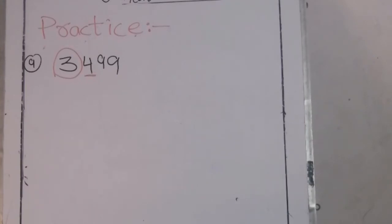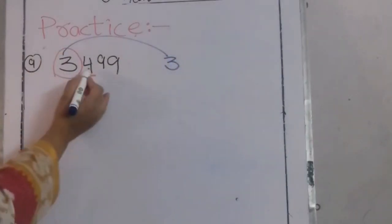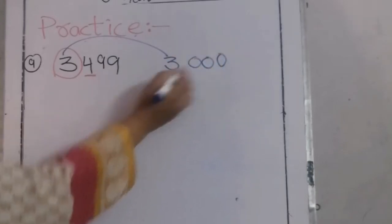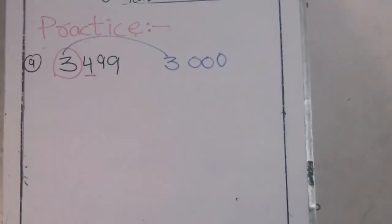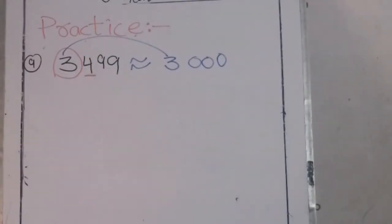The underlined digit is a weak number, so it can't push up our 3. The 3 remains the same. We write three zeros after the circled digit because all the digits after the circled digit become 0 in the final answer. So 3,499 becomes 3,000.